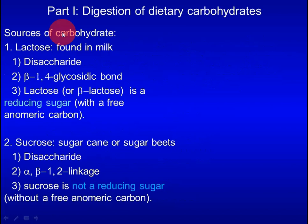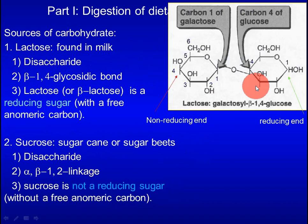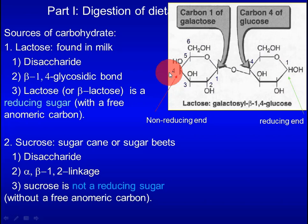Common dietary carbohydrates include lactose, sucrose, and starch. Lactose and sucrose are disaccharides. Lactose is found in milk. It consists of two monosaccharides — galactose and glucose — joined together by a beta-1,4 glycosidic bond. The end that contains a free anomeric carbon is the reducing end, and the end that does not contain a free anomeric carbon is the non-reducing end.